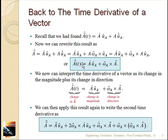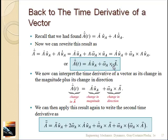Returning to the time derivative of a general vector a: a-dot equals the time derivative of the magnitude times û_a, plus a times the time derivative of û_a. The time derivative of the unit vector is omega cross û_a, so the full result is: ȧ = Ȧ û_a + ω × a. The first term is the magnitude change term; the second is the rotation term. If a is a position vector, this gives us velocity. For acceleration, we take another derivative, applying the chain rule term by term.